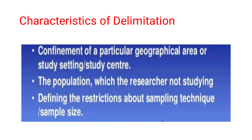Characteristics of delimitation: first is confinement to a particular geographical area or study center. For example, if I want to do a study on diabetes mellitus patients, I cannot do it for all patients in the world or a country or state. So I am delimiting myself to a particular hospital — say, a government hospital in a particular area.